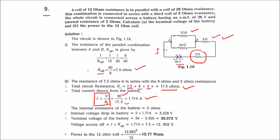Using this current we can find the terminal voltage of the battery. The internal resistance is 2 ohms, so multiplying by the circuit current gives the internal voltage drop. Subtracting this from the supply voltage, the terminal voltage is 26.572 volts.